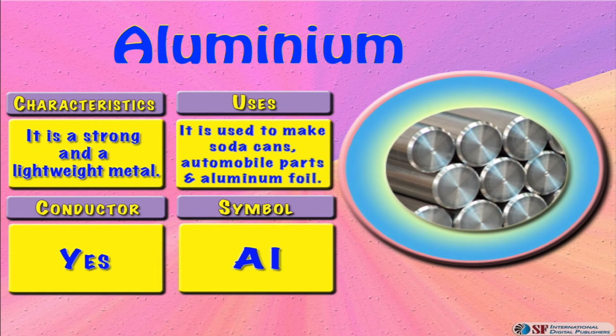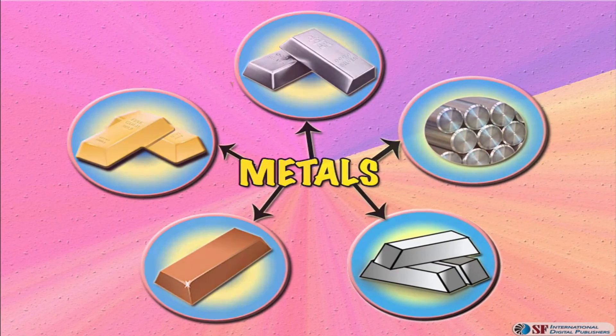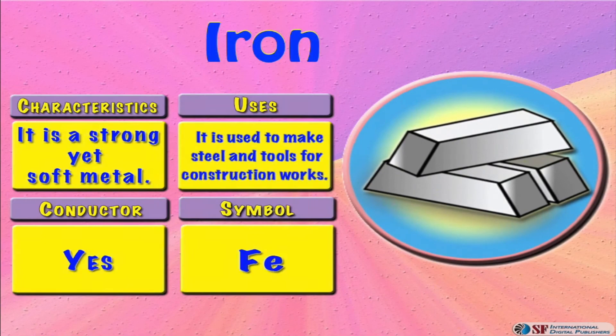Iron. It is a strong yet soft metal. It is used to make steel and it's also used in construction. It is a good conductor of electricity, and its symbol is Fe.